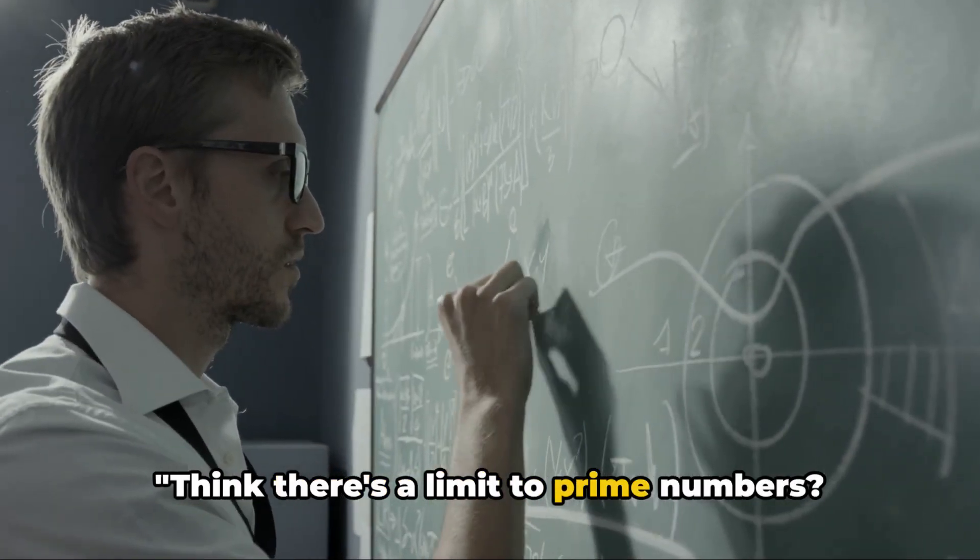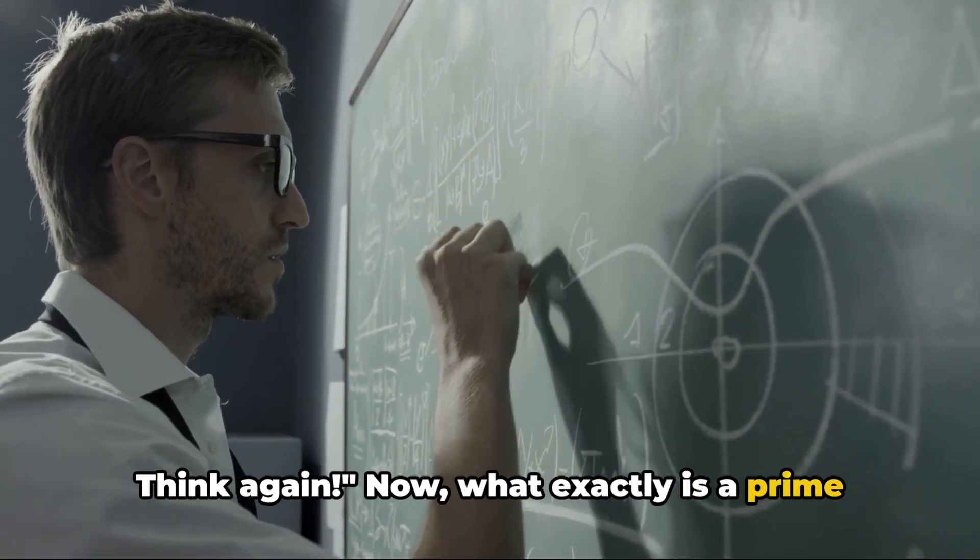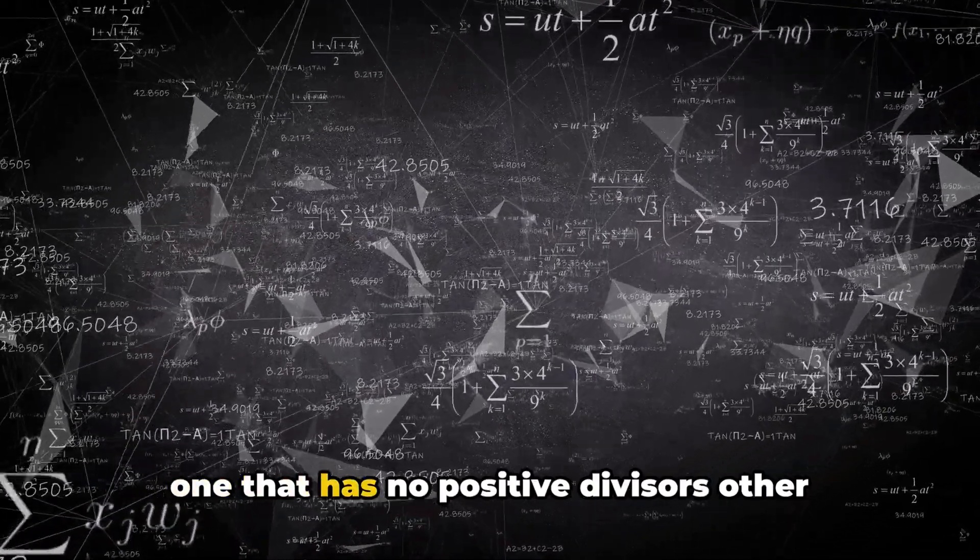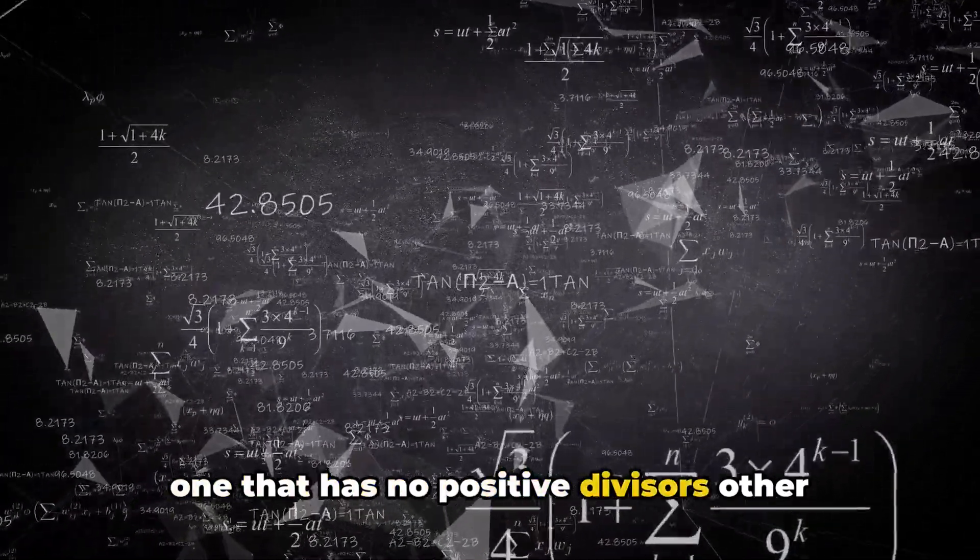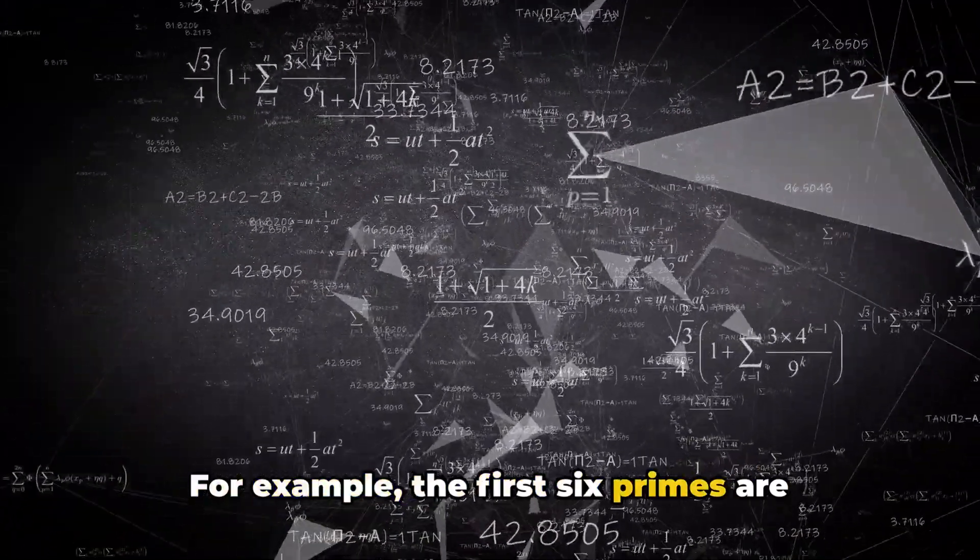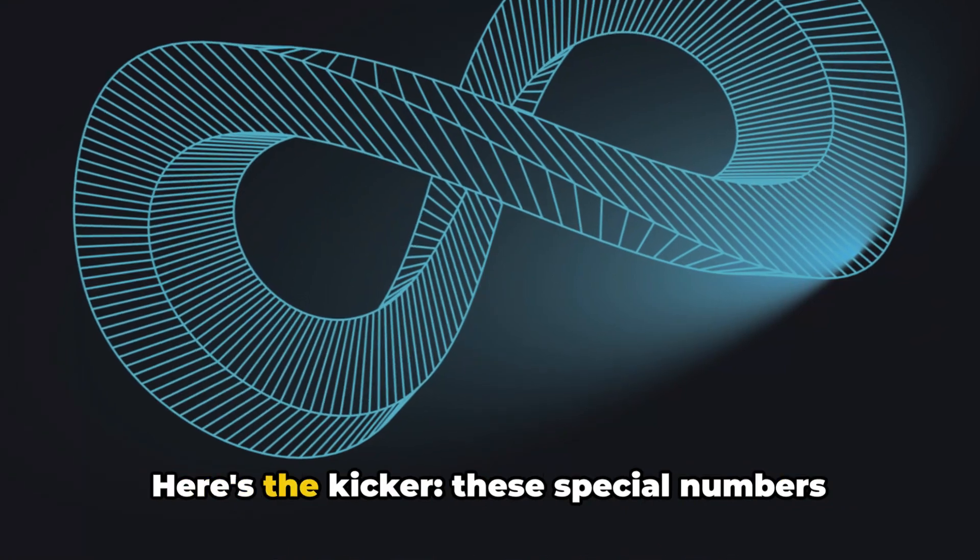Think there's a limit to prime numbers? Think again! Now, what exactly is a prime number? In the simplest terms, a prime number is a natural number greater than one that has no positive divisors other than one and itself. For example, the first six primes are 2, 3, 5, 7, 11, and 13. Here's the kicker.